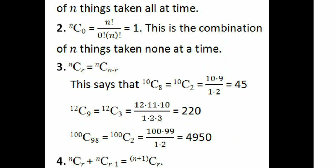Then nCr equals nC(n minus r). For example, 10C8 = 10C(10 minus 8) = 10C2 = 10 into 9 divided by 1 into 2 = 45. Also, 12C9 = 12C(12 minus 9) = 12C3. And 100C98 = 100C(100 minus 98) = 100C2. This property nCr = nC(n minus r) is important.